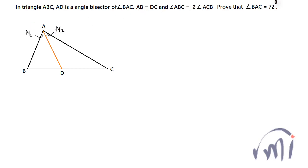AB is equal to DC — that means this side AB is equal to this line segment DC. And angle ABC is 2 times angle ACB. If we assume angle ACB as theta, then angle ABC is equal to 2 theta. We have to prove that angle BAC is equal to 72 degrees.